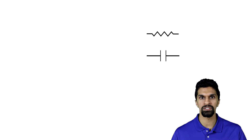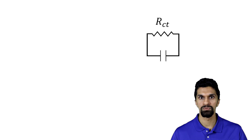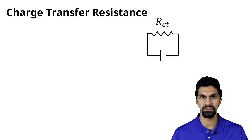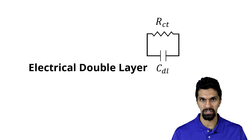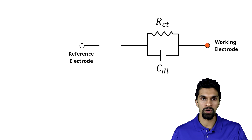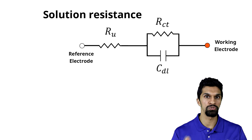This is a little bit easier to understand if we try to model the working electrode via a circuit model. We typically model the working electrode interface as a resistor and a capacitor in parallel, where the resistor RCT represents the charge transfer resistance, and CDL, the capacitor, represents the electrical double layer. Between the working and the reference electrode we have this resistor RU, which represents the solution resistance.